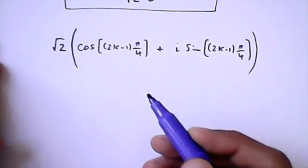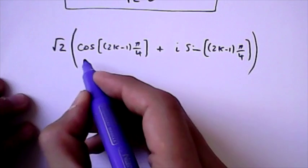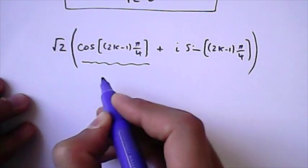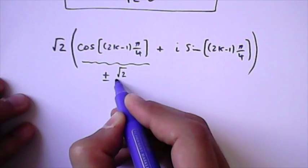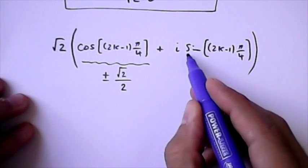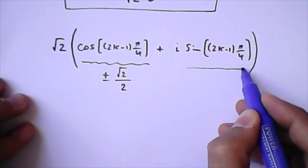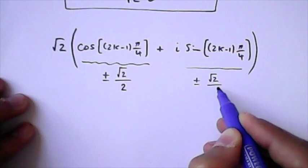So cosine of pi over 4 is square root of 2 divided by 2. But cosine of 3 times pi over 4 is minus that value. So it just goes from minus 1 to plus 1 all the time. So this would become plus and minus square root of 2 divided by 2. The same story is valid for sine. So this guy is also plus and minus square root of 2 divided by 2.